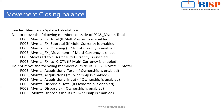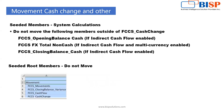We have members like Acquisitions Total (if ownership is enabled) and Disposals. For seeded members on system calculation, do not move the following: specifically the Opening Cash Balance. When you enable indirect cash flow, you get certain members, and FX Total Non-Cash appears when multi-currency is enabled — these should not be tampered with. The hierarchy shown in the screenshot — with Total Movements, Closing Balance, and Variance — should not be disrupted.